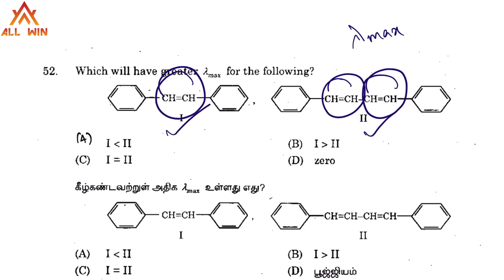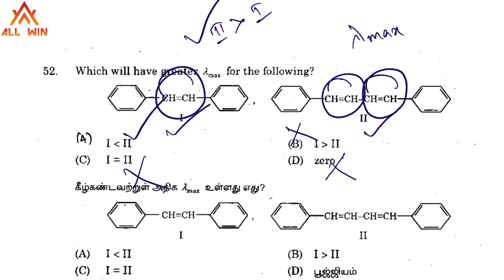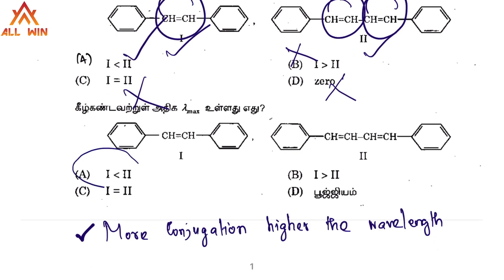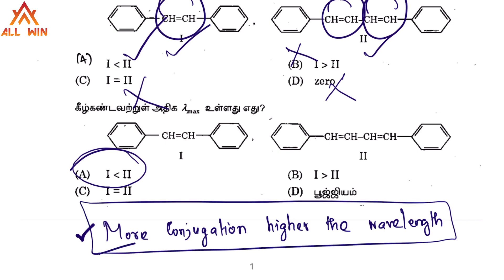Comparing the two structures: structure 2 has greater conjugation than structure 1, so structure 2 has a higher lambda max. Looking at the options, 2 is greater than 1, so option A is the correct answer. The principle is: more conjugation means higher wavelength — lambda max increases.